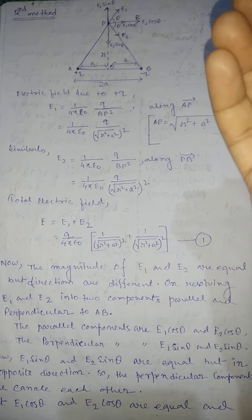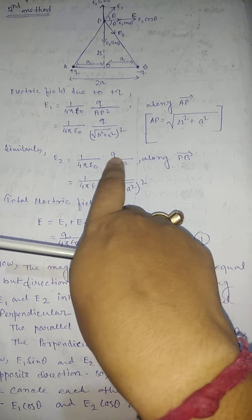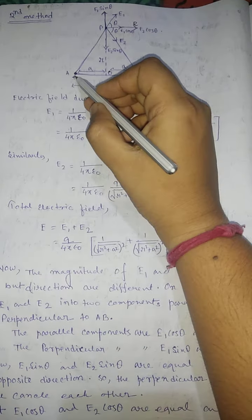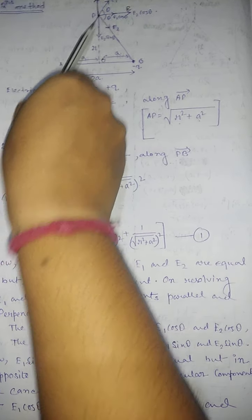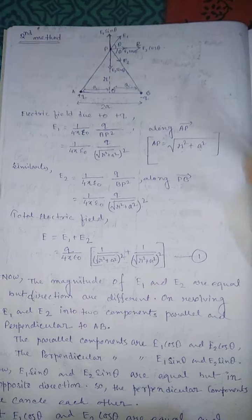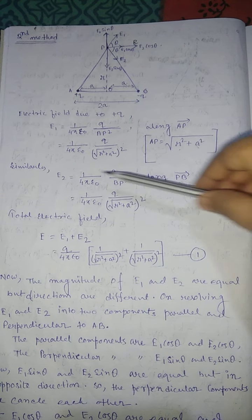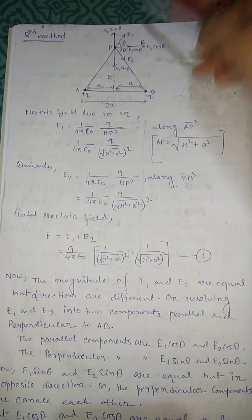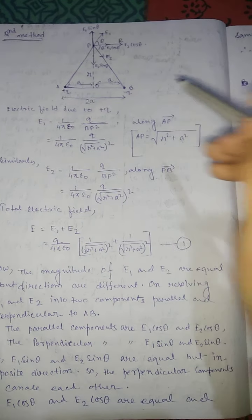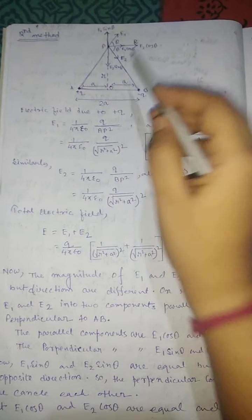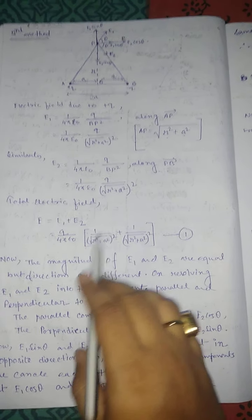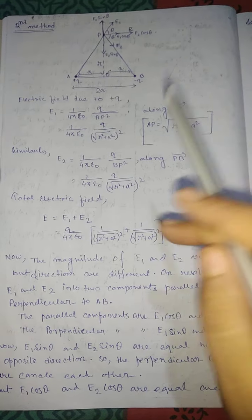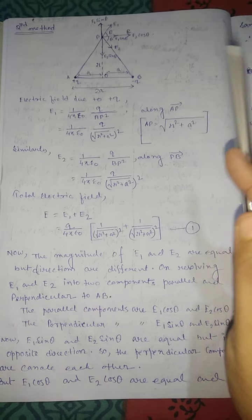Similarly E2 has the same magnitude. The directions of E1 and E2 are different — E1 points away from the +q charge and E2 points toward the −q charge — but because we did not use vector signs for the magnitudes, we treat them as positive values for now.